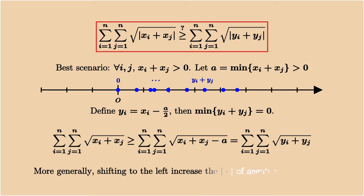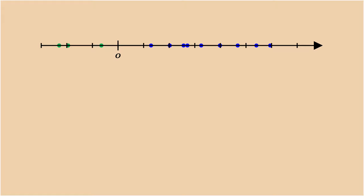But this is really the best scenario because we don't have any negative numbers. Once the negative numbers are present, like those green dots, shifting to the left will increase the absolute value of those negative numbers. So we really need to differentiate between positive and negative.